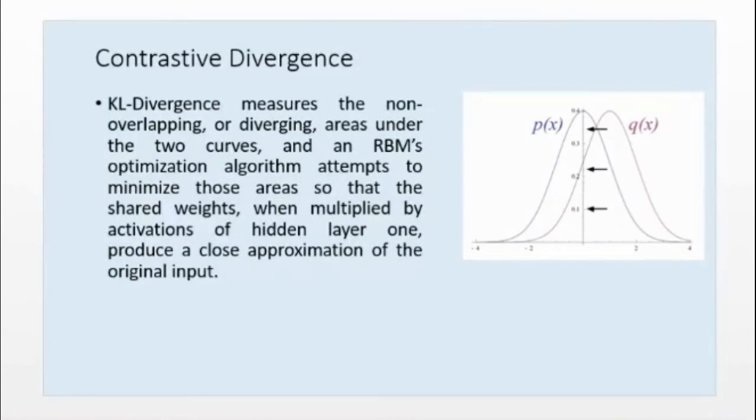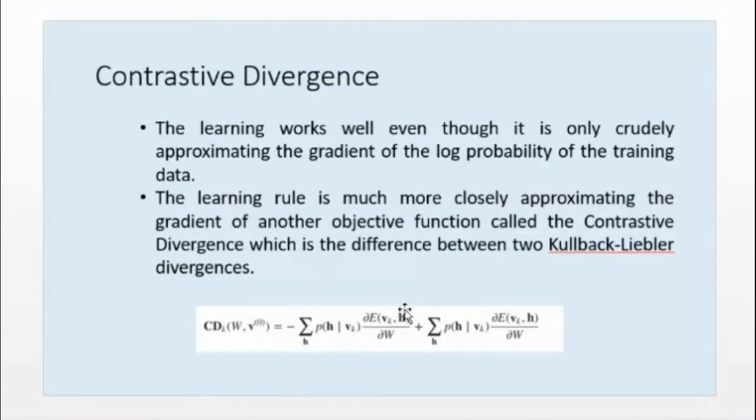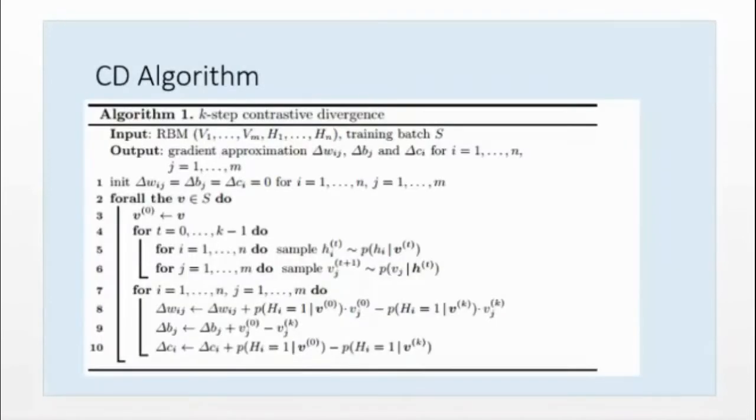So this is the thing. So using this formula, for this formula, the corresponding algorithm is like this. So we have V1, V2, Vm, visible nodes, H1, H2, Hn, hidden nodes. Training batch sample set is S, training data set is S. So gradient approximation, we have to calculate del WIJ, del BJ bias factor, and del CJ.